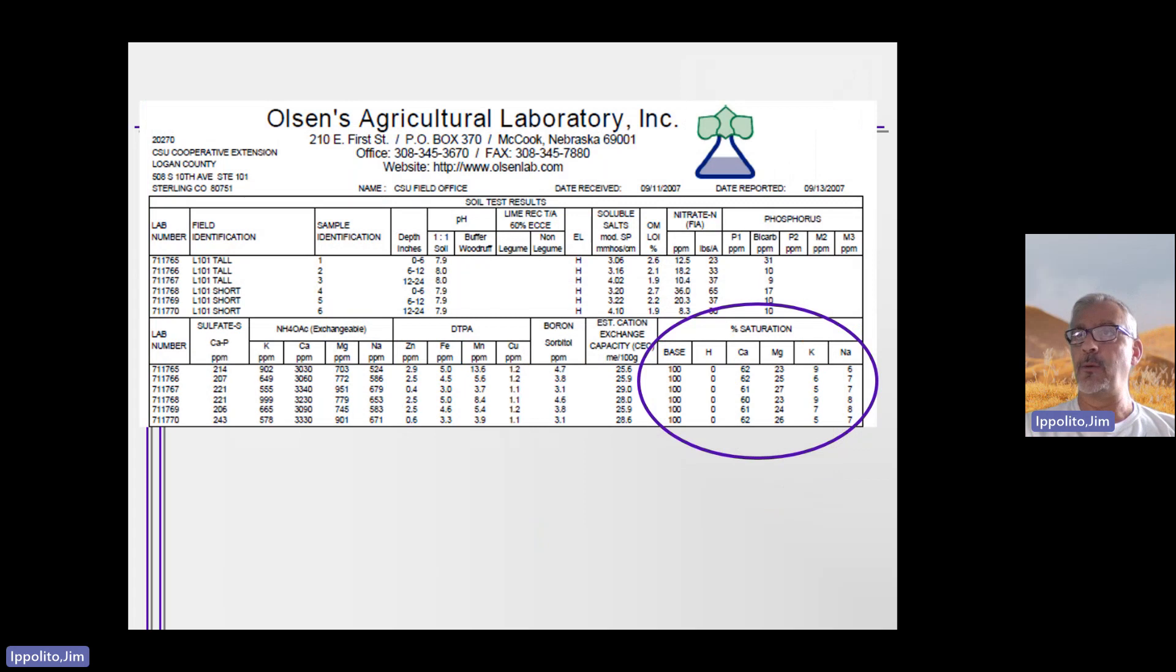In this example that I shared with you earlier, this is a soil sample from Colorado. When you look at the percent saturation in this soil, the percent base saturation is 100.